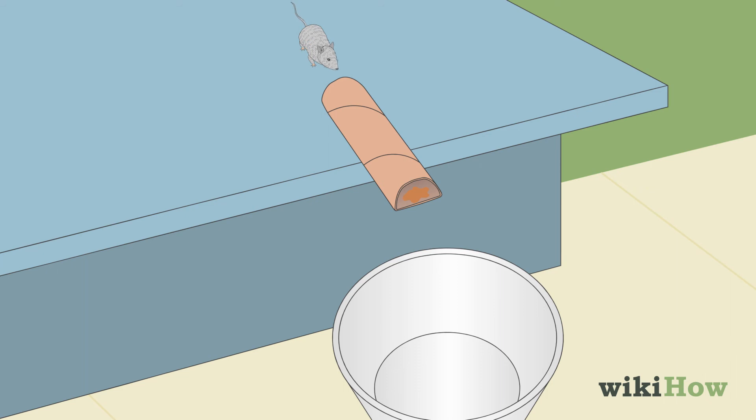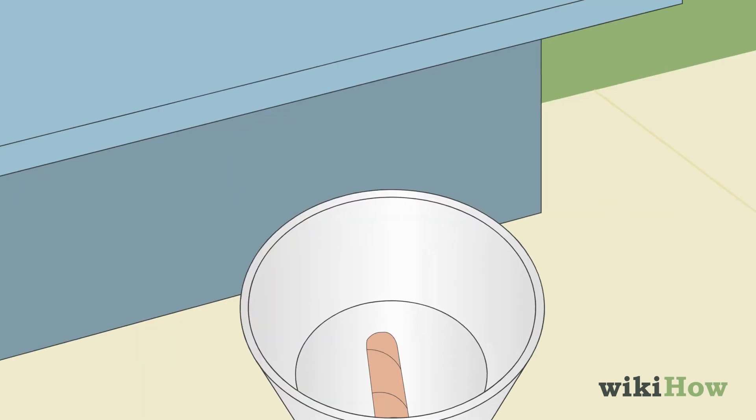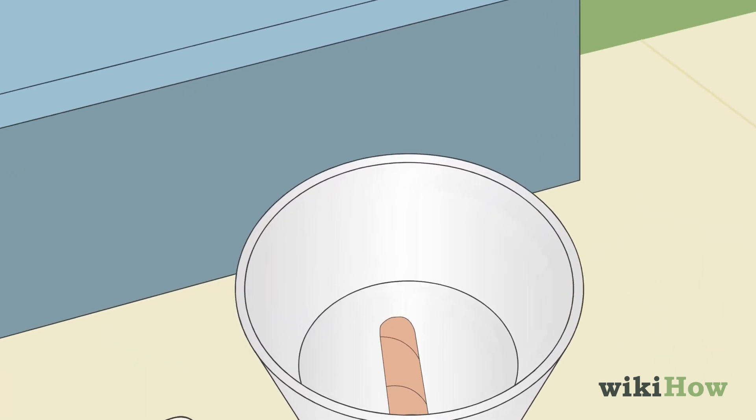Wait for the mouse to crawl through the tube to get to the bait, which will cause it to fall into the bucket or can. Check the can daily, or any time you notice the tube has fallen.